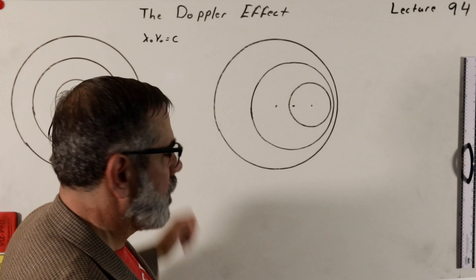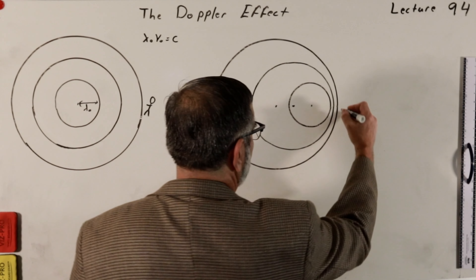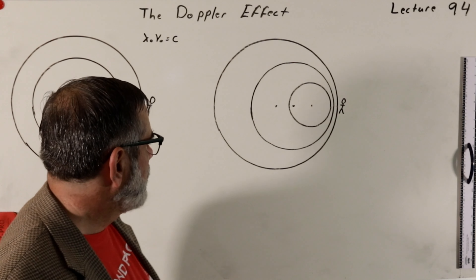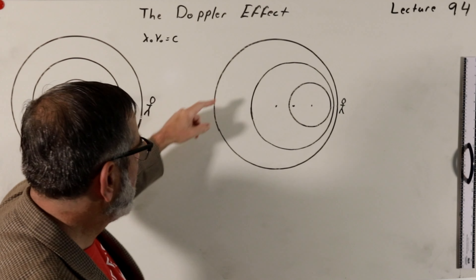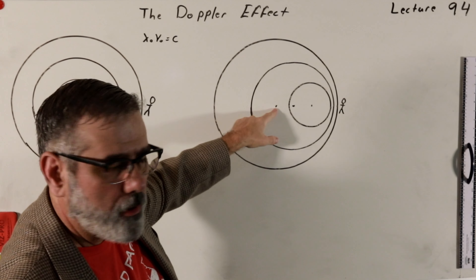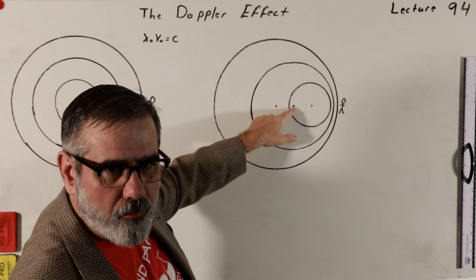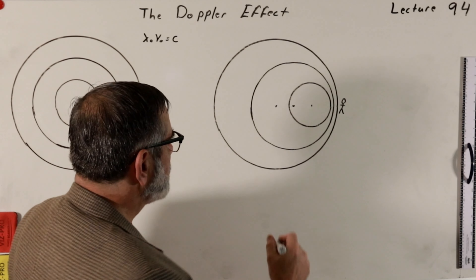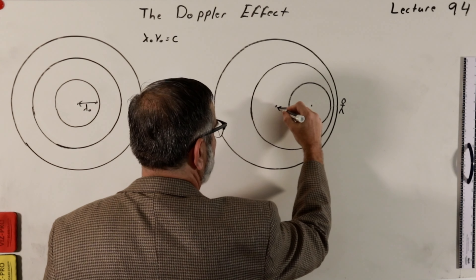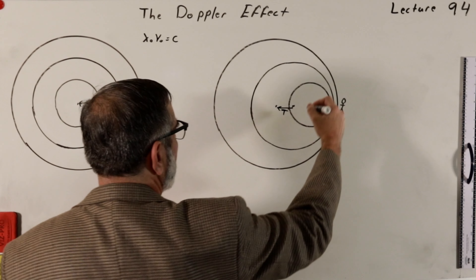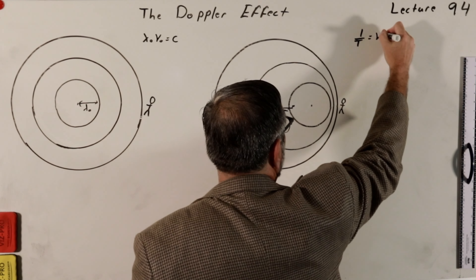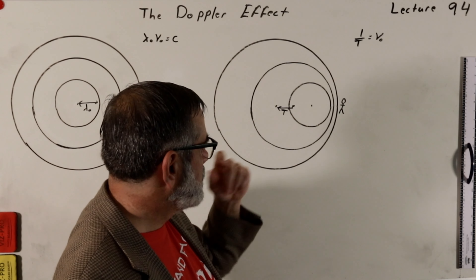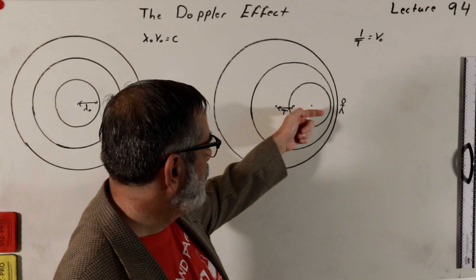But what if the source moves toward the receiver? That's what I've drawn over here. The receiver is stationary just like before, but the source is moving. First it's here and shoots out a wave — that's the outer wave front — then it shoots out another wave, where the distance between these emission points is just a period T, which is proportional to 1 over nu nought. The receiver is going to see a much shorter wavelength if the source is moving towards it.